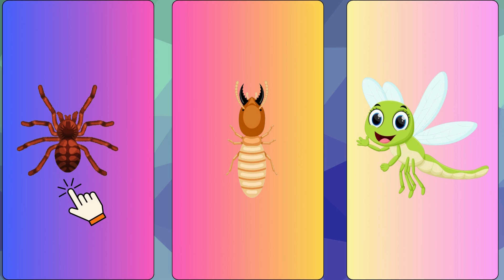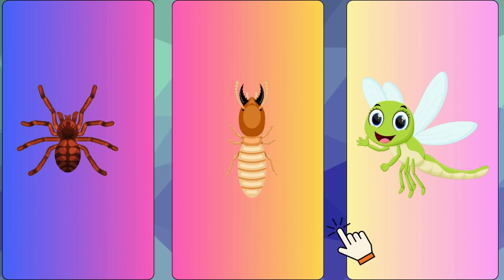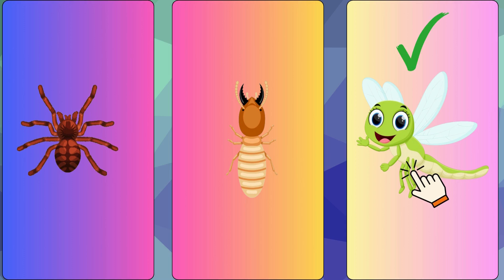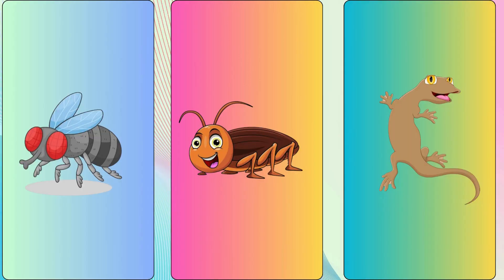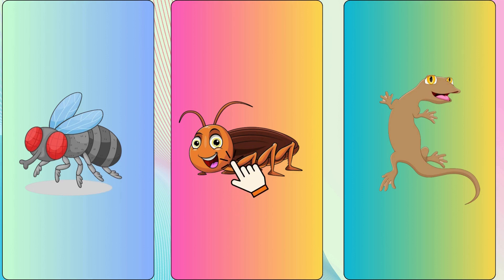This one is dragonfly? Hmm... This one is dragonfly? Yes! This one is dragonfly! Hooray! Which one is cockroach? Hmm, this one is cockroach? No. This one is cockroach? Yes, this one is a cockroach.